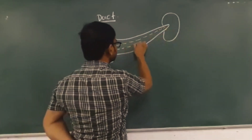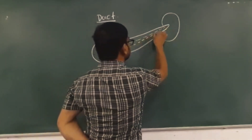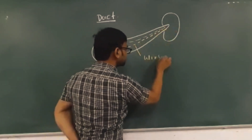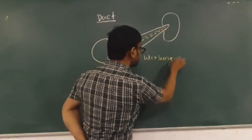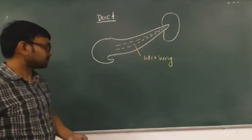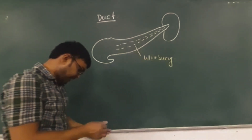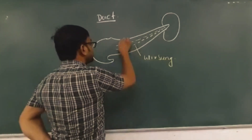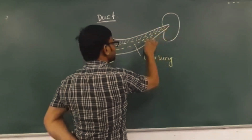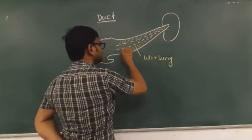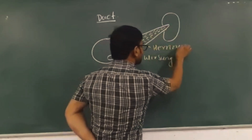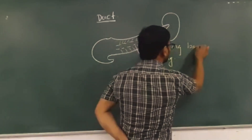This main duct is also known as the main duct of Wirsung. Small ducts are joining the main duct — this arrangement is known as the herring bone pattern.